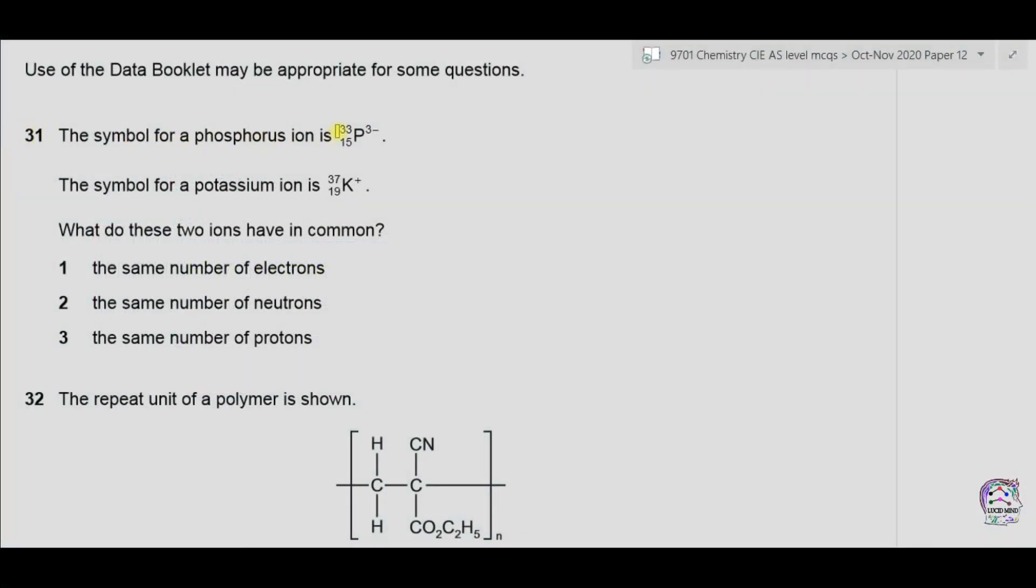Question 31. The symbol for phosphorus ion is P-3, 33-15. The symbol of potassium ion is also given. What do these two ions have in common? Number 1, the same number of electrons, then we have neutrons, then protons. Let's find electrons. In phosphorus, we have 15 electrons already present and the negative charge is 3. So 3 electrons are added, so total number of electrons will be 18. In potassium, we can see that we had 19 protons. So there were 19 electrons and 1 electron is lost as the charge is positive. So number of electrons left is also 18. So 1 is correct.